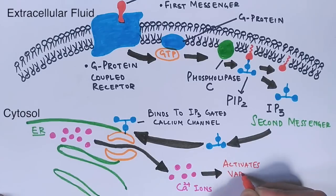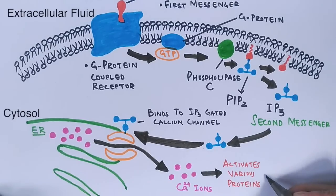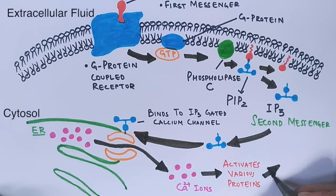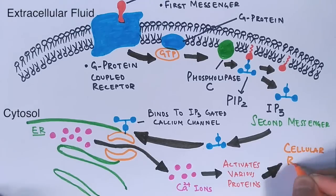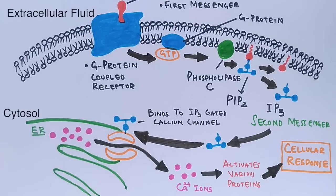After that, the calcium ions activate the next protein in one or more signaling pathways, and ultimately we have the cellular response. This is all about calcium and IP3 in signaling pathway.